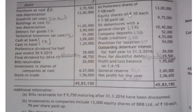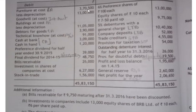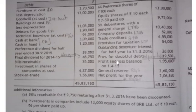Moving on to the credit side: six percent preference shares come under share capital; equity shares come under share capital. Five percent debentures with a general charge are long-term borrowings. Company deposits are long-term borrowings. Trade creditors are short-term borrowings. Provision for taxation is a short-term provision. Outstanding debenture interest for half year, which is twenty-six thousand, is a liability of the company to pay the debenture holders, so it comes under other current liabilities. Provision for doubtful debts, which is nineteen thousand five hundred, is basically minused from your debtors.